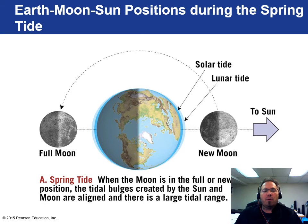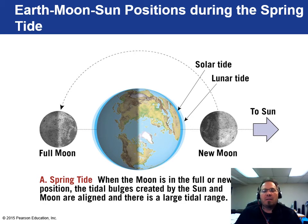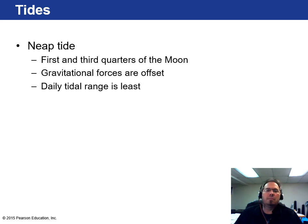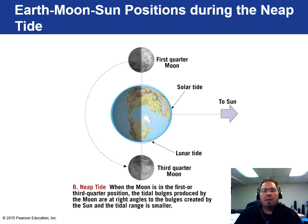During spring tide, when the moon is in full or new position, the tidal bulges align with the sun as well, creating a cumulative effect with the highest and lowest tides. The neap tide is the opposite — occurring at the first and third quarters of the moon, when gravitational forces offset each other, producing the smallest tidal range of the month. During neap tide, the moon and sun are out of alignment, so the tidal effect is minimized.